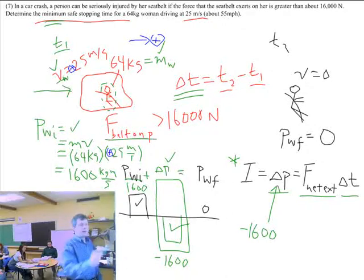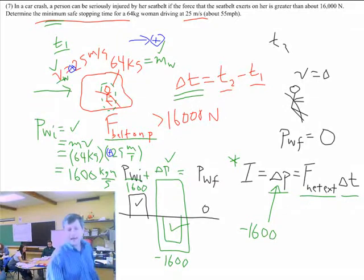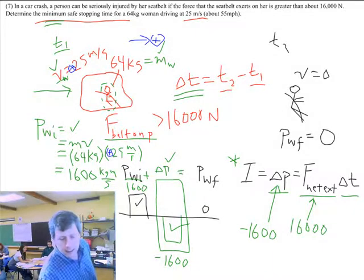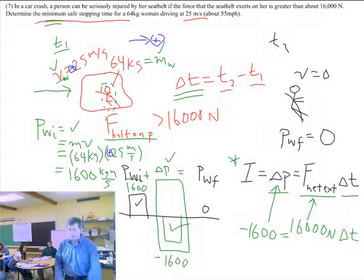The force of the belt on the person, this is the only unbalanced external force. Sure, the seat is holding her up and the earth is pulling her down, but this one is not balanced. So I know this quantity. This is 16,000 newtons times some unknown delta T.